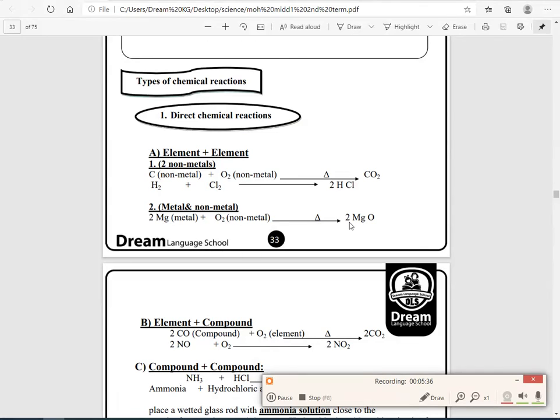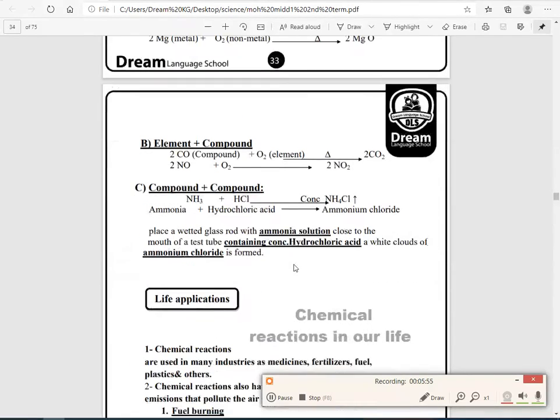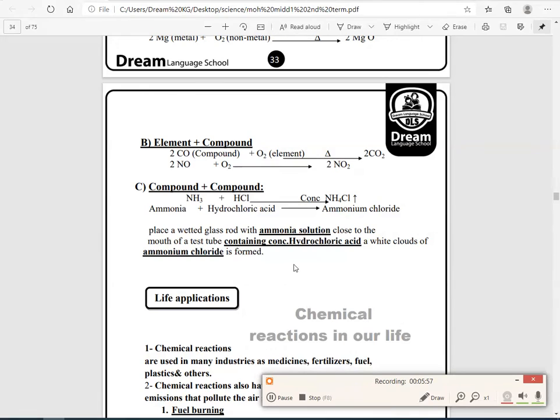And the next type of chemical reaction, element plus compound: 2CO, which is compound, plus O2, which is element, give us 2CO2, which is compound. 2NO, which is nitrogen monoxide plus oxygen, will give us 2NO2, which is this example on element plus compound.